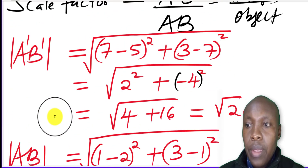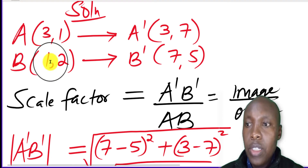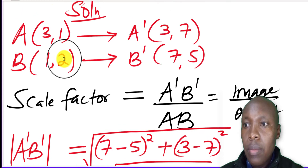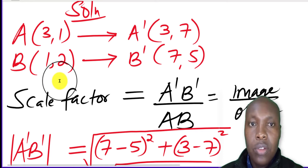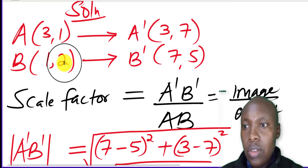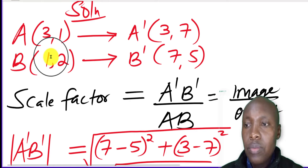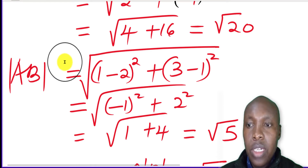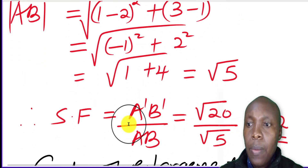To get the length of line AB, we use the object points A and B. We compute (1−2) squared plus (3−1) squared — or equivalently (2−1) squared plus (1−3) squared; you can do it either way. That gives negative 1 squared plus 2 squared, which is 1 plus 4, giving the square root of 5.